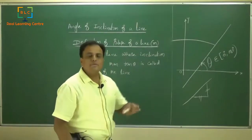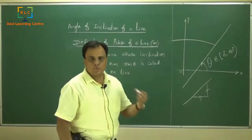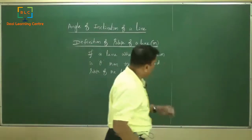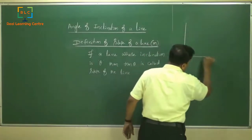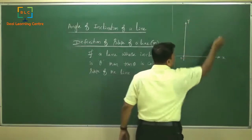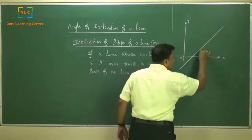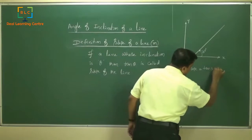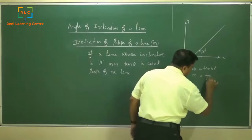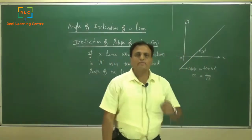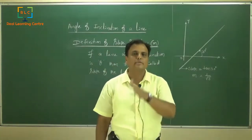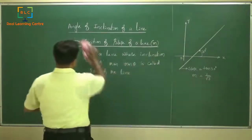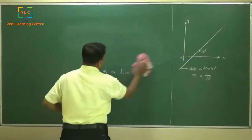Let us discuss some simple examples of how to find slopes of different lines. If a line whose inclination is 30 degrees, then slope equals tan 30 degrees, therefore m equals 1 by root 3. Similarly, if a line whose inclination is 45 degrees, then slope equals tan 45, which equals 1.